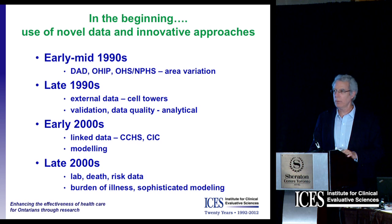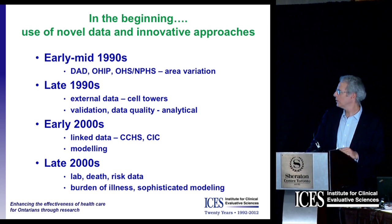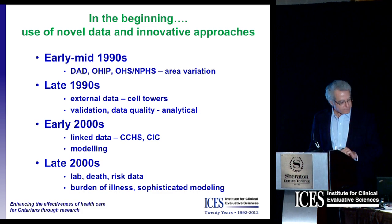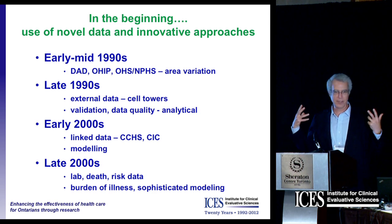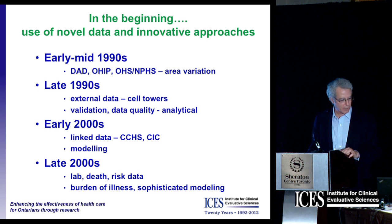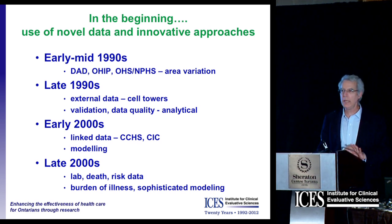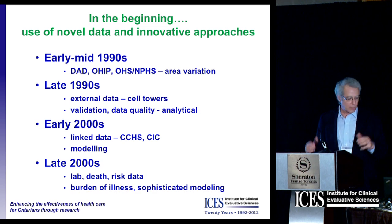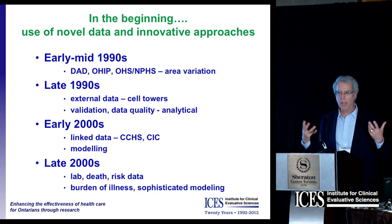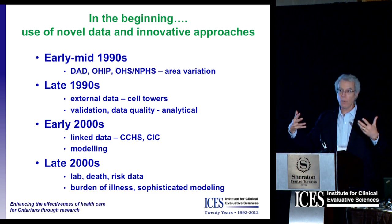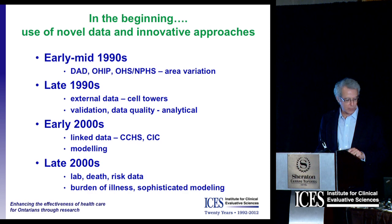By the late 1990s we were enriching the data. We started to bring in and link data from places like cell phone towers — a major lateral move — and Don did that work. Validation, data quality, analytical work, in addition to descriptive work, really started to take off. By the early 2000s there were linked data; we started to have waves of the Canadian Community Health Survey — the NPHS and the CCHS were linked — where we could take people with rich data and follow them forward for years, and people made wonderful use of those linked data with lots of advanced modeling studies.